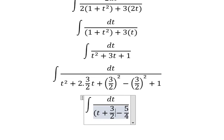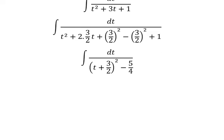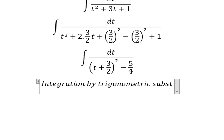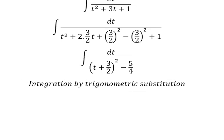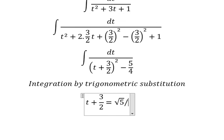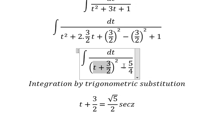This becomes the identity (t + 3/2) squared. Now I need to use integration by trigonometric substitution. I will put t plus 3/2 equals to the square root of 5 over 2 times sec(z). This gives 5/4 sec squared(z), and using factorization, sec squared(z) minus 1 equals tan squared(z), so we substitute this in.